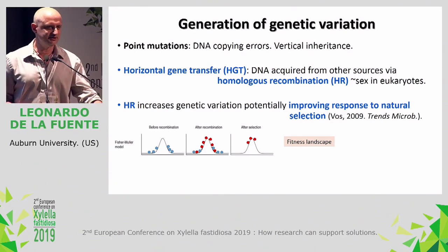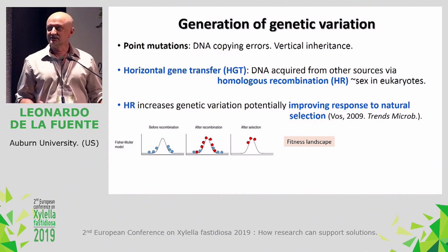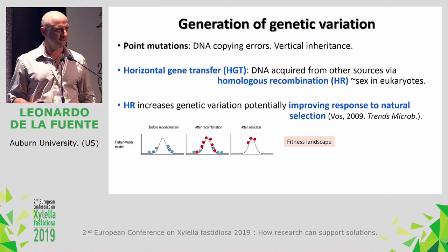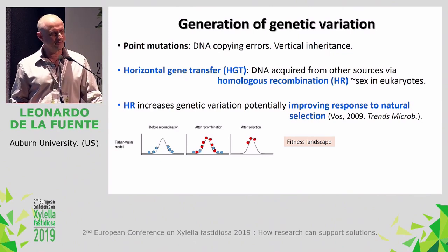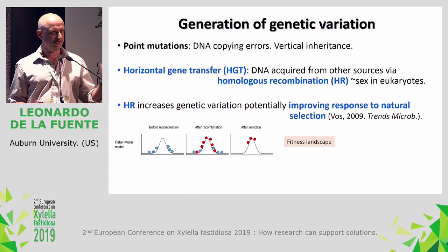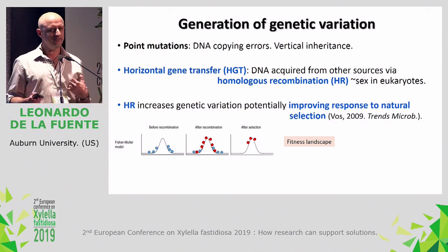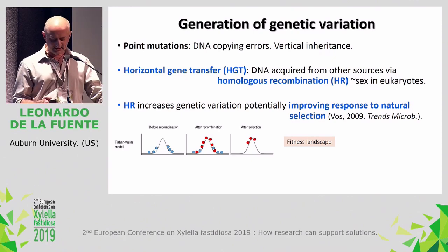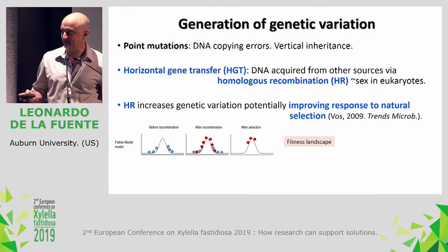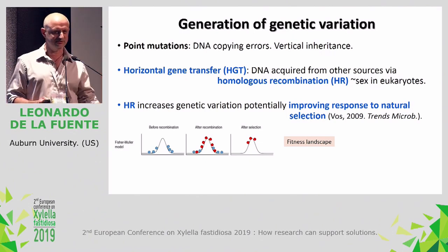I'm going to talk about generation of genetic variation. We're looking at how these bacteria differ from each other. Bacteria can generate diversity through multiple mechanisms: fine mutations caused by DNA copying errors, or horizontal gene transfer — the topic I'll cover today. Horizontal gene transfer means DNA from exogenous sources is incorporated and recombined into the genome through homologous recombination — this is the equivalent of sex in eukaryotes. The reason homologous recombination is important is debatable, but in general it increases genetic variation and potentially improves the response to natural selection. This is modeled by the Fischer-Muller model, which represents a fitness landscape: populations that overcome a hurdle — encounter something new as a bacterium — and climb to the top are the successful ones that survive selection.